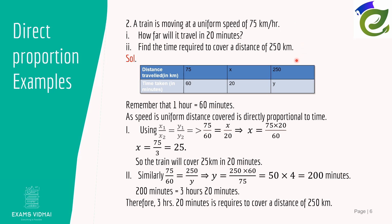Using the tabular form: 75 km is traveled in 60 minutes. We need to find the distance in 20 minutes. Using x₁/y₁ = x₂/y₂: 75/60 = x/20. Cross-multiplying gives x = (75 × 20) / 60 = 75/3 = 25 kilometers.